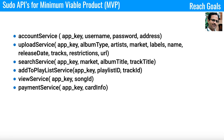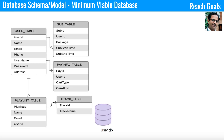Now we'll talk about the database schema. This is a minimum viable database that you can keep extending based on your needs. In the user DB, we have a user table, a subscription table, a payment info table, and a playlist table. The playlist table points to a track table with all track-related information. Since it is a subscription-based model, the subscription table supports monthly, yearly, or free subscriptions.